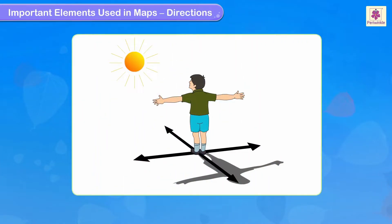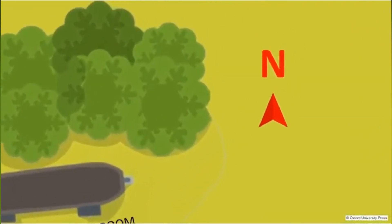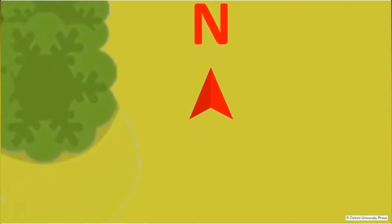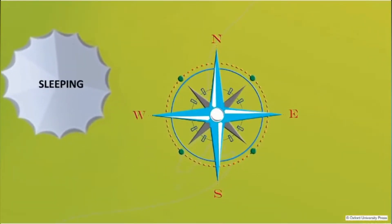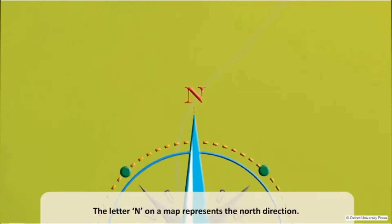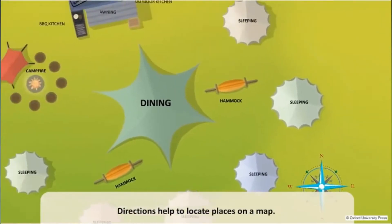Let us learn how to find directions. Stand in an open place, facing the sun. East is in front of you. West is behind you. Your left arm points to the north and your right arm points to the south. Directions help to locate places on a map.